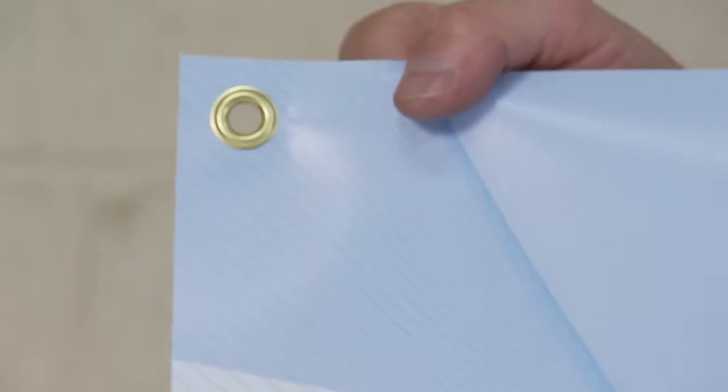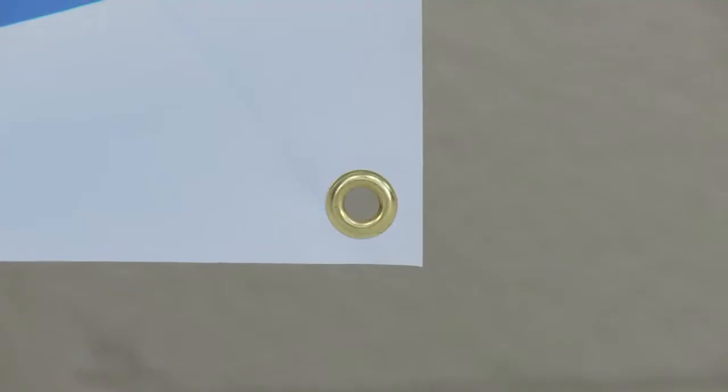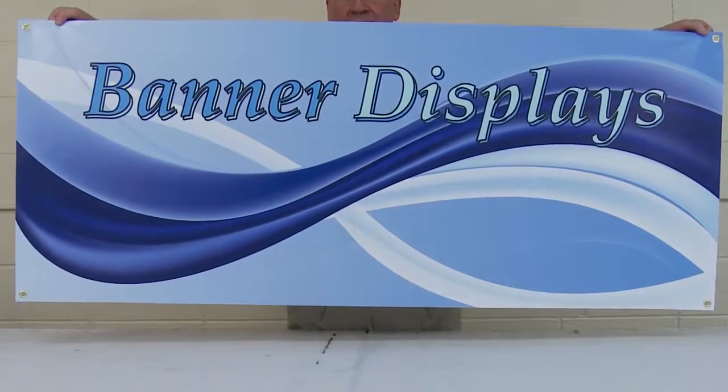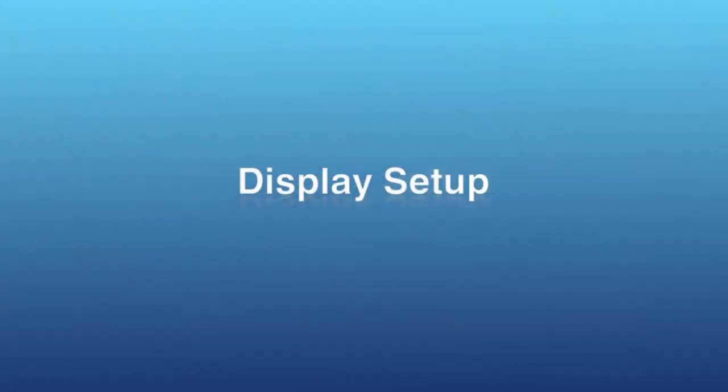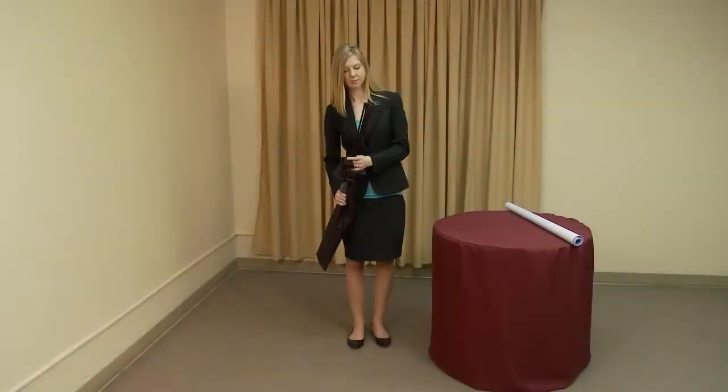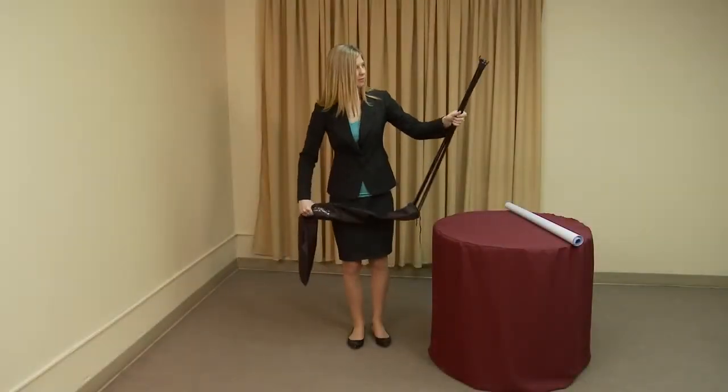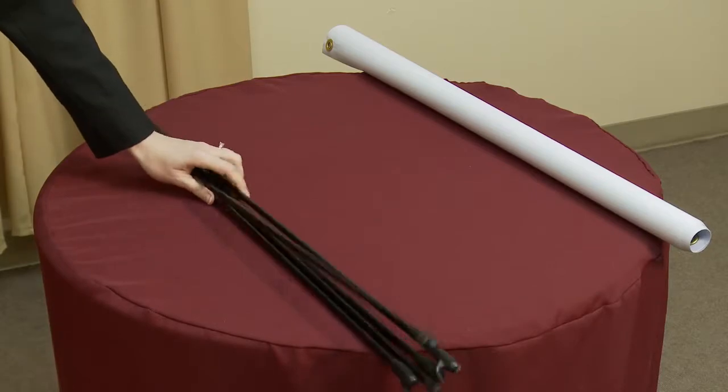Once the grommets are set, you are ready to install the graphic onto your display. Begin by removing the parts from the bag and placing the parts along with your grommeted banner on a clean flat surface.